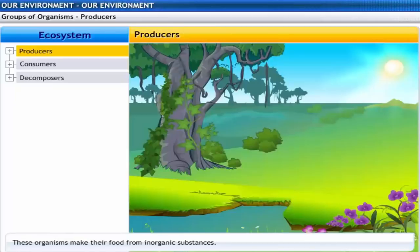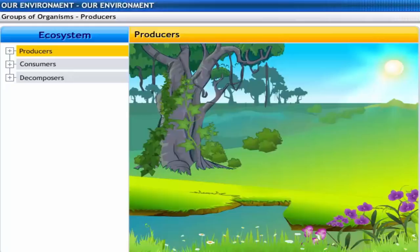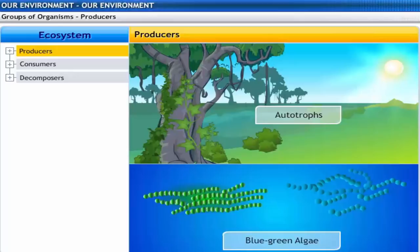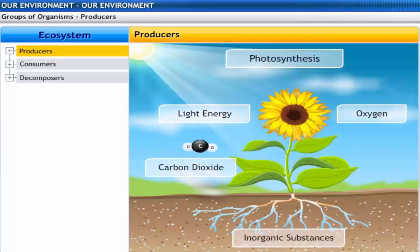Producers are organisms that produce their own food without the help of any other organisms. They make their food from inorganic substances. They are also known as autotrophs. All green plants and certain blue-green algae which can produce food by photosynthesis come under this category.